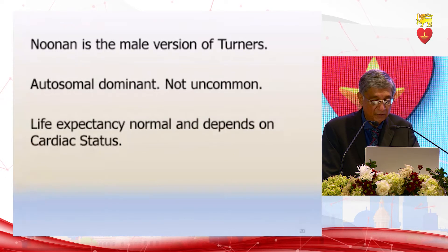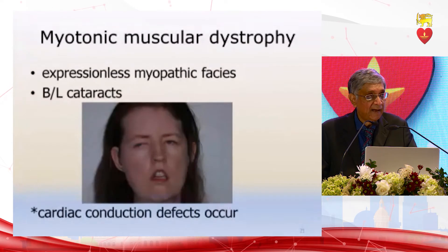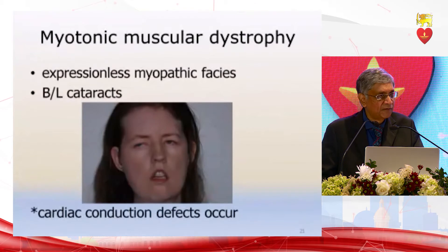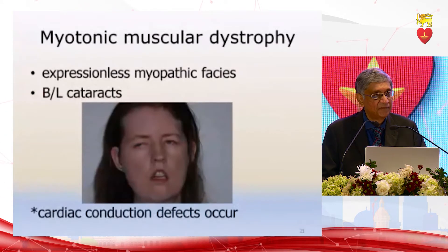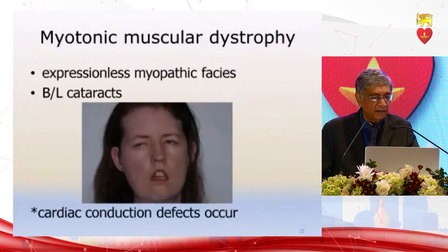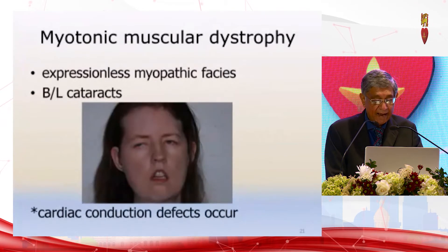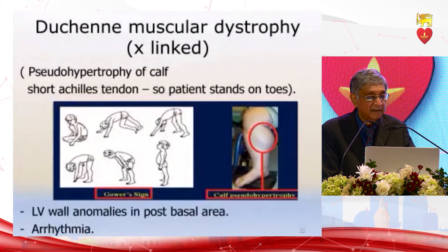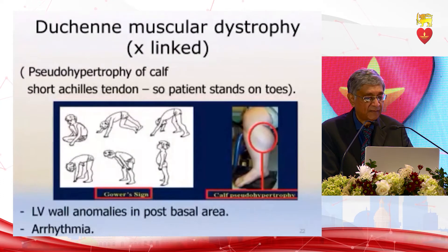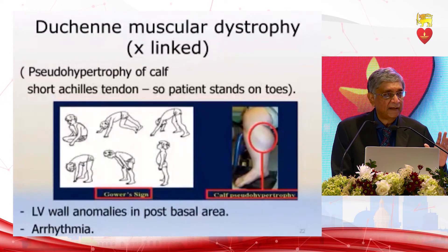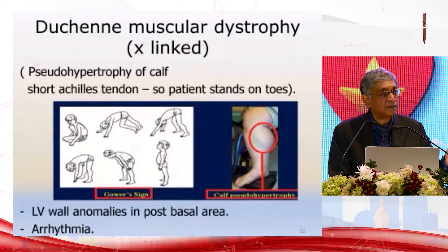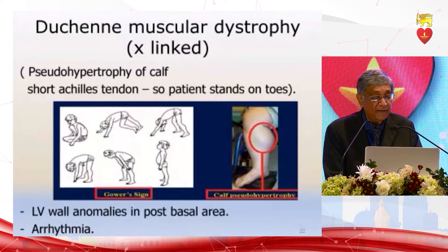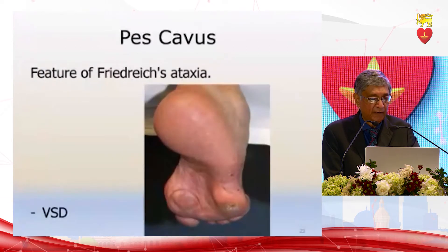The life expectancy of Noonan or Turner's syndrome depends on the cardiac status of the patient, so it is important that they be treated adequately. The muscular dystrophies are also associated with cardiomyopathies because it is the muscle — the actin-myosin components. In myotonic muscular dystrophy, the expressionless myopathic facies, bilateral cataracts, and conduction defects occur. In Duchenne muscular dystrophy, you have LV abnormalities — either hypertrophy or hypokinesia — and arrhythmias because of conduction defects through the defective musculature of the myocardium.